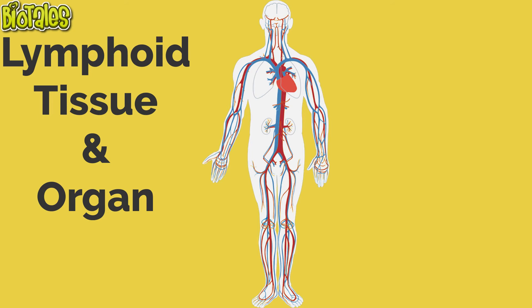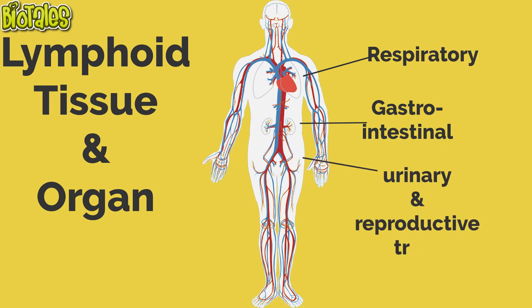Lymphoid tissues and organs are scattered all around the mucous membranes that line the gastrointestinal, respiratory, urinary, and reproductive tracts. They protect against microbes that are ingested or inhaled.